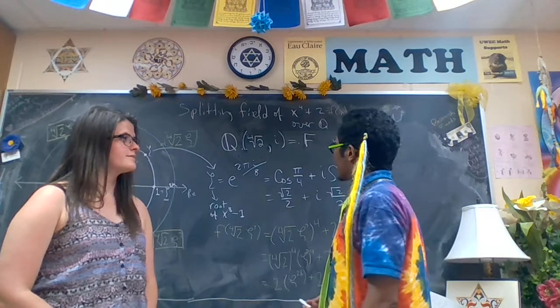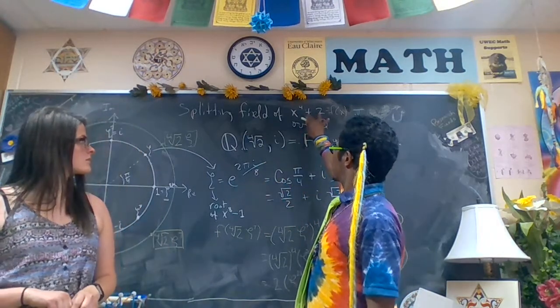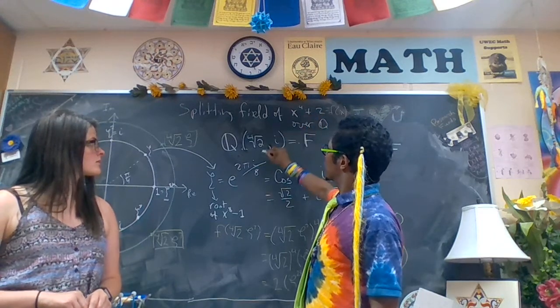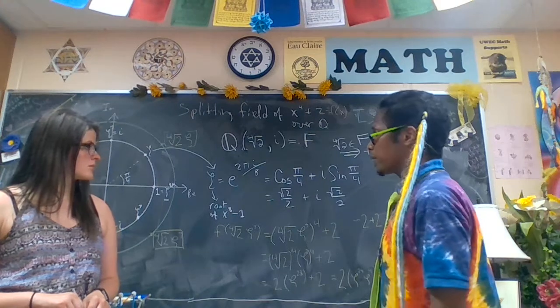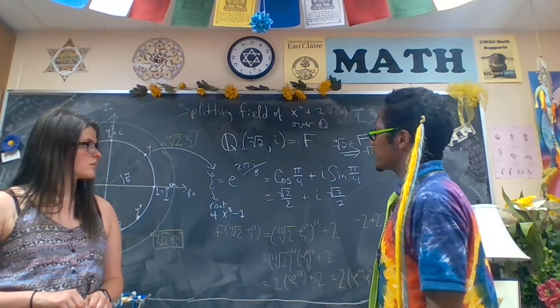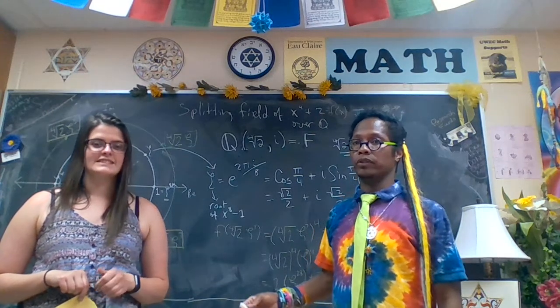So, we did it. And then, we're going to use this expression of the splitting field to find the Galois group of this polynomial. This will be very easy when we consider the minimal polynomials of these two elements, respectively. So, we'll do that next. And thank you for watching part 1 of this video.